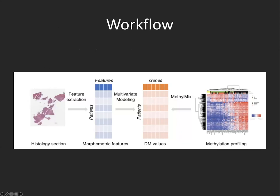We start with these images, extract morphometric features from them, and then use MethylMix on the methylation data to define DM values, which are differential methylation states. These essentially categorize or binarize genes into either hypo, normal, or hypermethylation states. We then associate these two data types with each other.